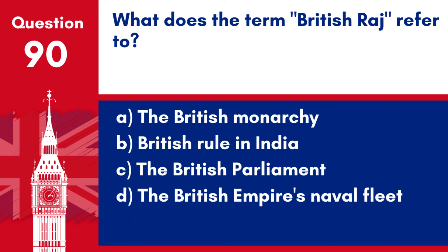Question 90. What does the term 'British Raj' refer to? a. The British monarchy. b. British rule in India. c. The British Parliament. d. The British Empire's naval fleet.